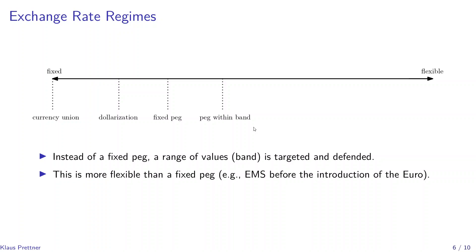This leads to the next regime, which is a little bit more flexible — not a fixed peg where you have one fixed exchange rate to another currency, but a band that you allow for. For example, there is a fixed exchange rate to another country's currency, but you allow the exchange rate to fluctuate within plus or minus 15% of this fixed rate. This was also the case in the European Monetary System, where after the initial much stricter peg broke down, they allowed for a much more flexible band.